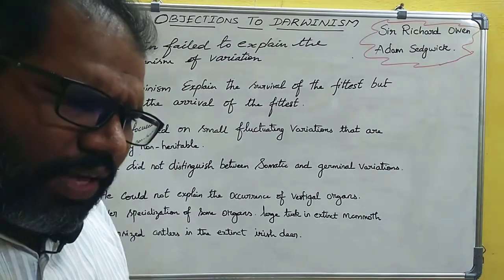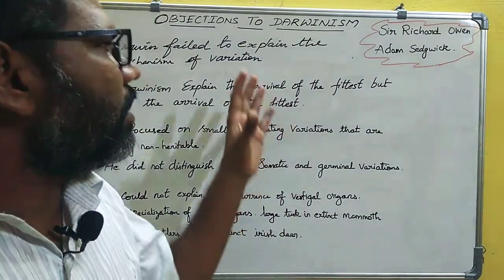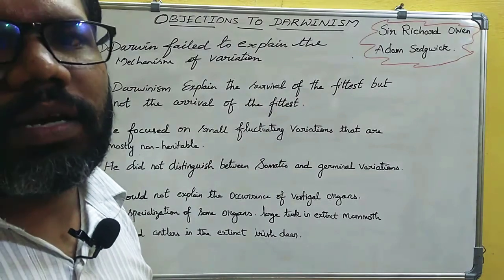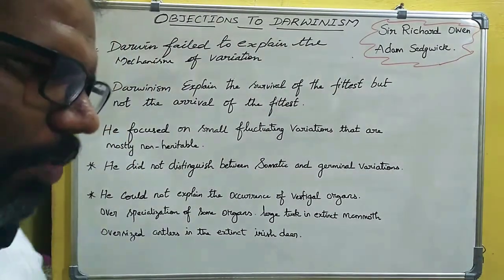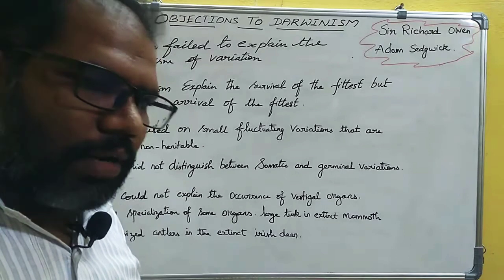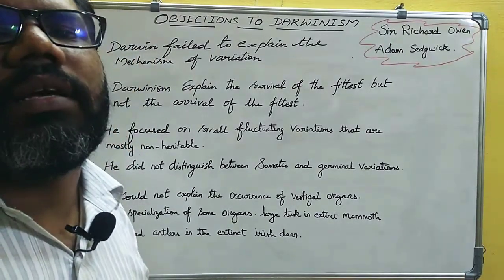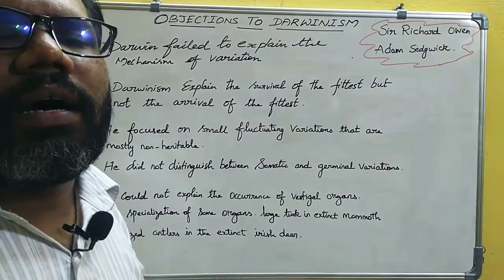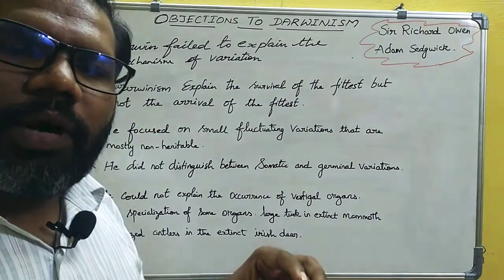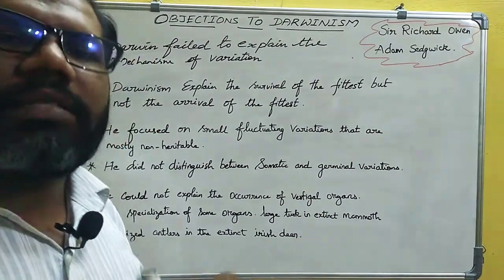Darwin explained variations as a starting point. For example, one moth is white and another is brown. The brown moth camouflages with the tree trunk. But the white moth on the trunk is easy for birds to find out and prey upon.